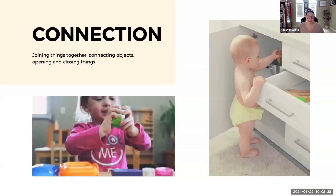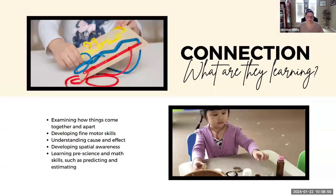The first is the connection schema. A connection schema includes an interest in joining things together, connecting different objects, and also opening and closing things. In this schema, young children are examining how things come together or come apart, starting to develop an understanding of cause and effect, learning pre-science and mathematics skills like prediction and estimation, and also developing fine motor skills and a sense of spatial awareness.